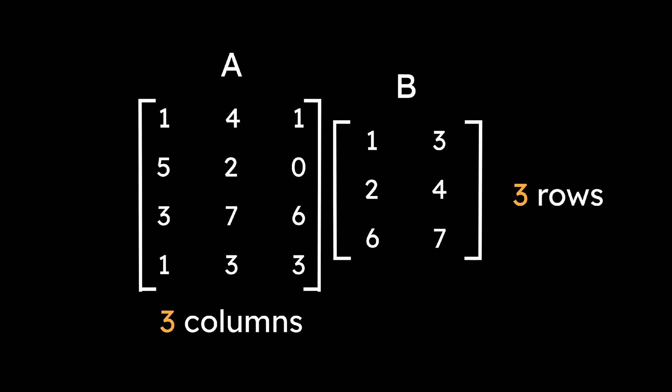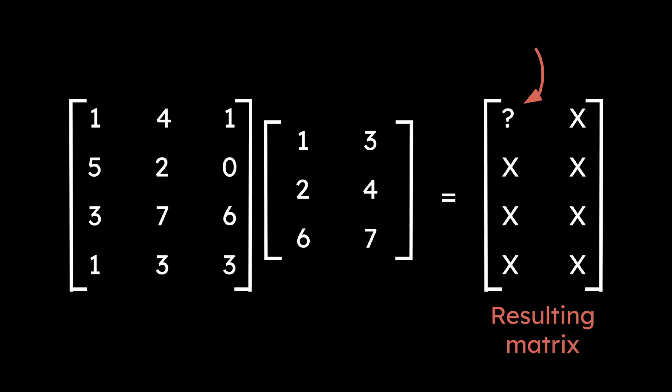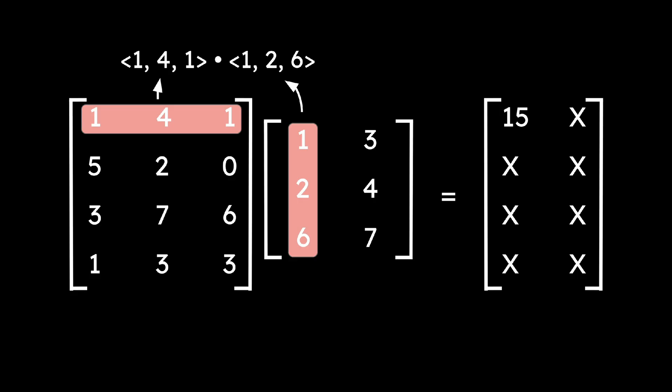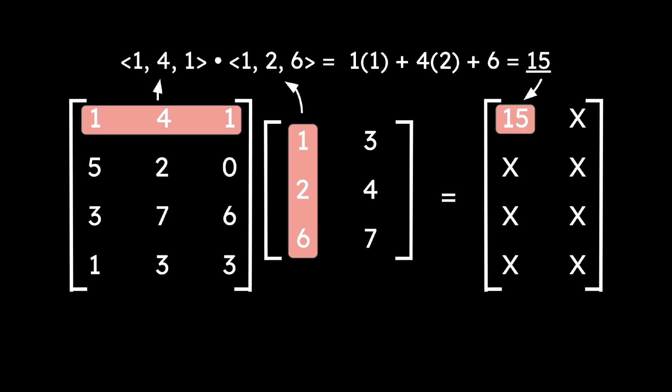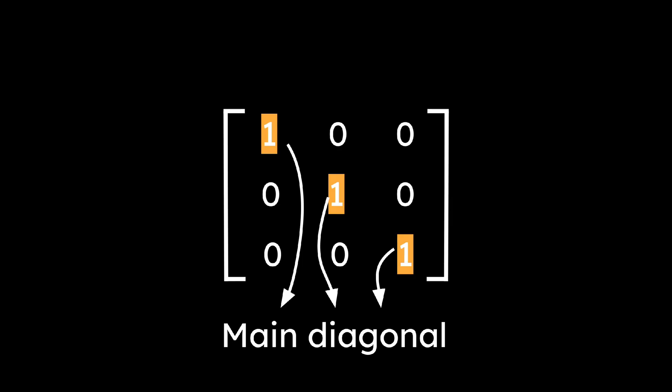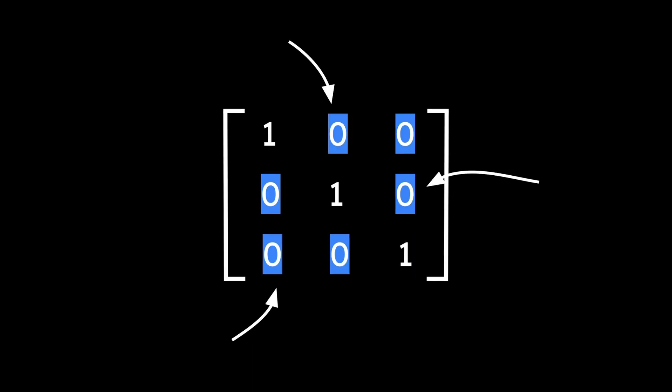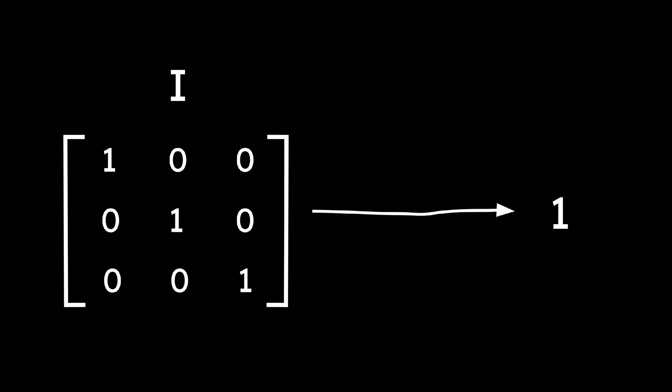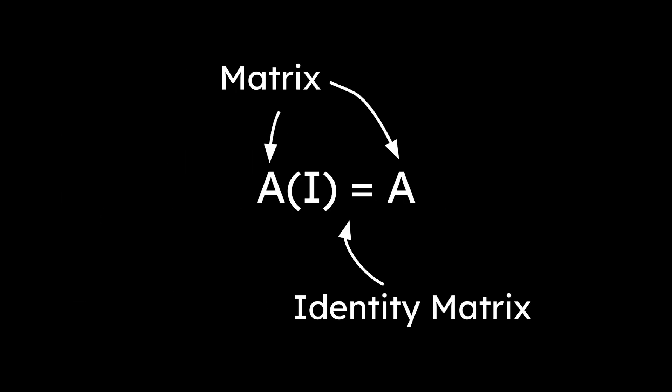Matrix multiplication is more complicated. For two matrices A and B, the product AB is only possible if the number of columns in A equals the number of rows in B. To find any single entry in the resulting matrix, take the dot product of a row from A with a column from B, and calculate. The identity matrix is a special square matrix with ones on the main diagonal, and zeros everywhere else. It acts like the number one in multiplication. A times I equals A.